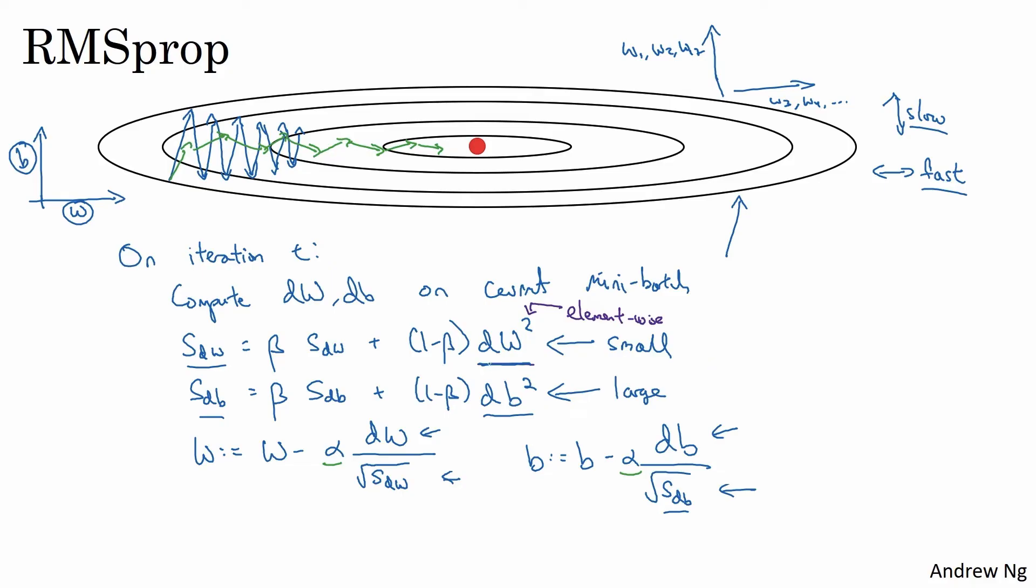In practice, dw is a very high dimensional parameter vector. db is also a very high dimensional parameter vector. But the intuition is that in dimensions where you're getting these oscillations, you end up computing a larger sum of weighted average for these squares of derivatives. And so you end up damping out the directions in which there are these oscillations.